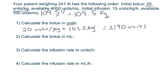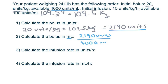Use that information and the available concentration to calculate the injection dose in milliliters. He needs 2,190 units with 4,000 units per milliliter available. 2,190 divided by 4,000 gives 0.5475. Using syringe rounding to the hundredths place, the answer is 0.55 milliliters.